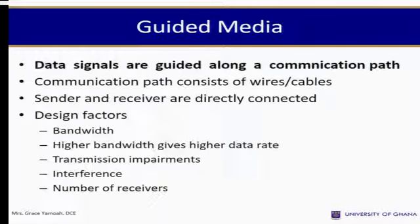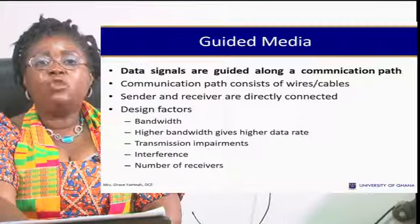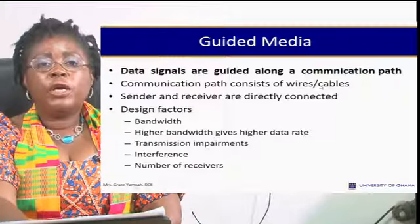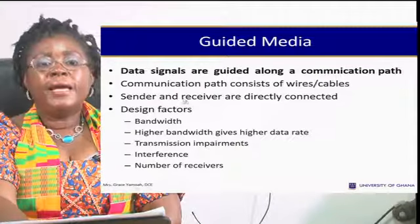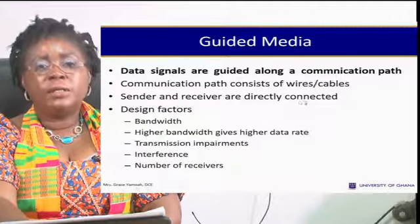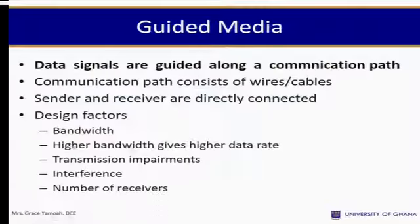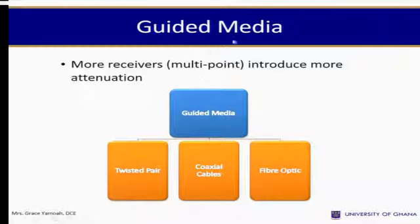In guided media, data signals are guided through a communication path consisting of wires or cables, and the sender and receiver are directly connected. Design factors include bandwidth — higher bandwidth gives higher data rates — transmission impairment, interference, and number of receivers. Guided media can be a twisted pair cable, a coaxial cable, or a fiber optic cable.